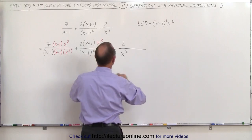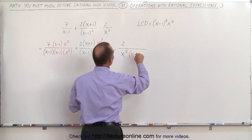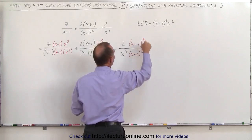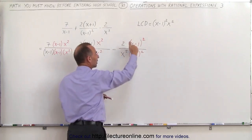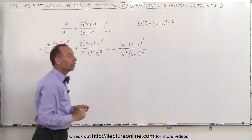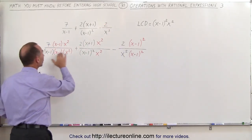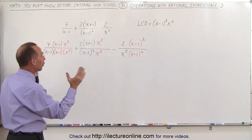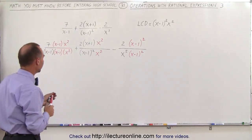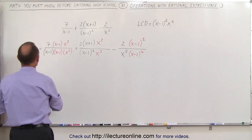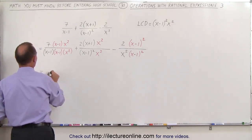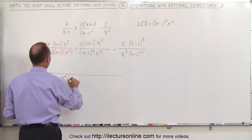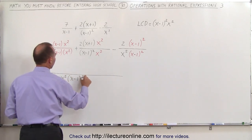What I'm missing in the denominator is the quantity x minus 1 squared, and I have to multiply the numerator by exactly the same thing. Now all three denominators are the same common denominator, which means I can write the whole thing over one common denominator — everything over the quantity x squared times x minus 1 squared.